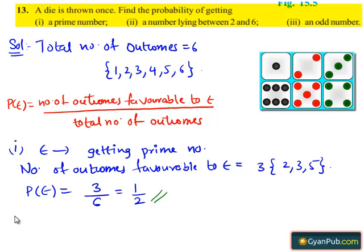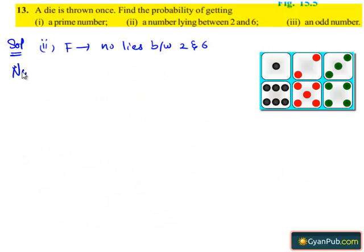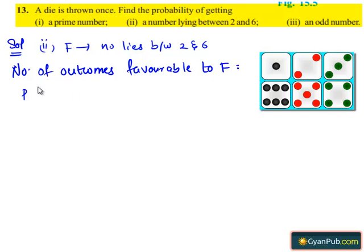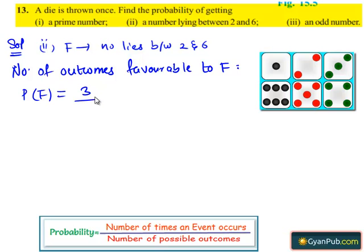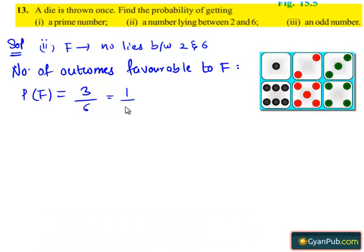Moving on to the second part. Let F be the event that the number lies between 2 and 6. The number of outcomes favorable to event F equals 3, which are 3, 4, and 5. Then P(F) = 3 divided by 6. Here 3 is a common factor; 3 goes into 3 once and into 6 twice. Therefore the probability of getting a number lying between 2 and 6 is 1 divided by 2.